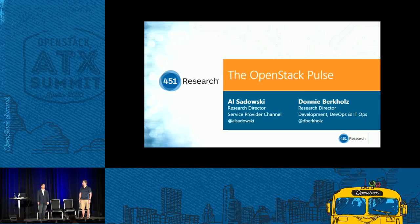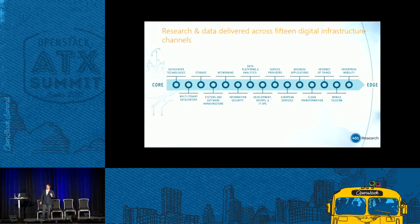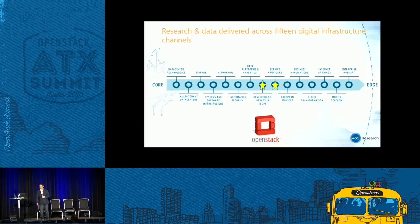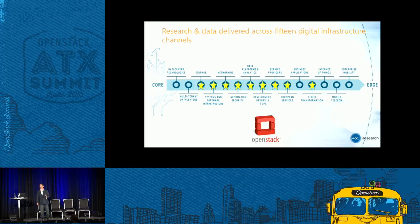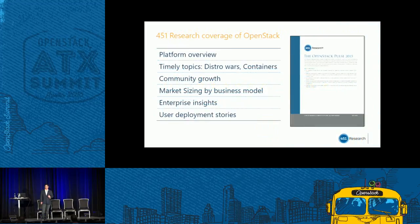We've got about 40 minutes, and we're going to take you through what we call the OpenStack Pulse — our analysis of what we see around OpenStack. We publish an annual report called the OpenStack Pulse. We've been doing it for three years now. We cover how the platform has evolved, talk about timely topics — is containers a friend or a foe of OpenStack? We talk about the different distros and the distro wars.